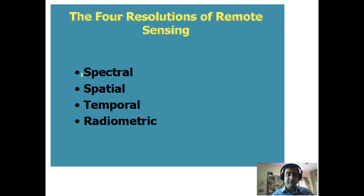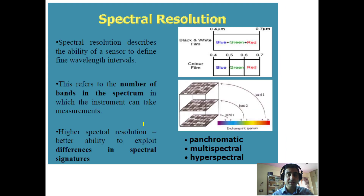These four resolutions — spectral, spatial, temporal, and radiometric — are now discussed in turn. Spectral resolution describes the ability of a sensor to define fine wavelength intervals.